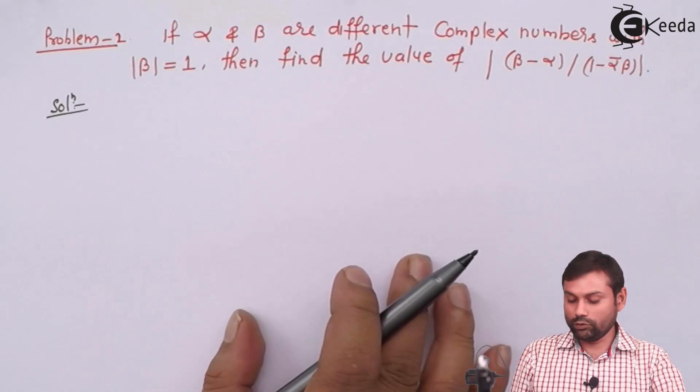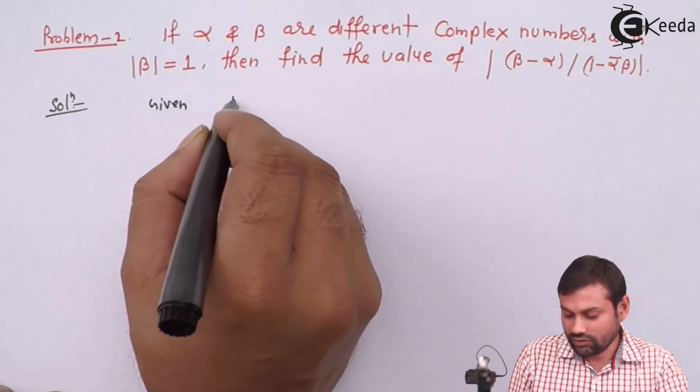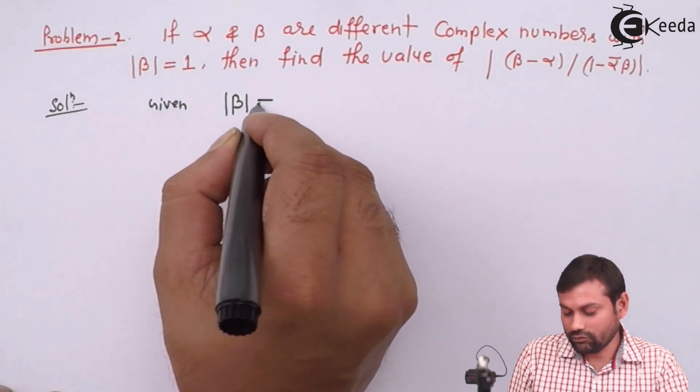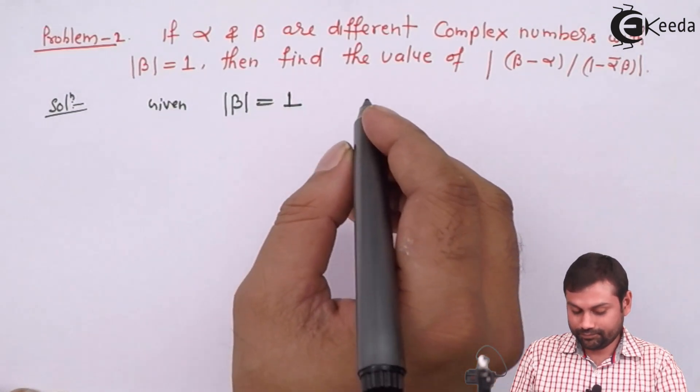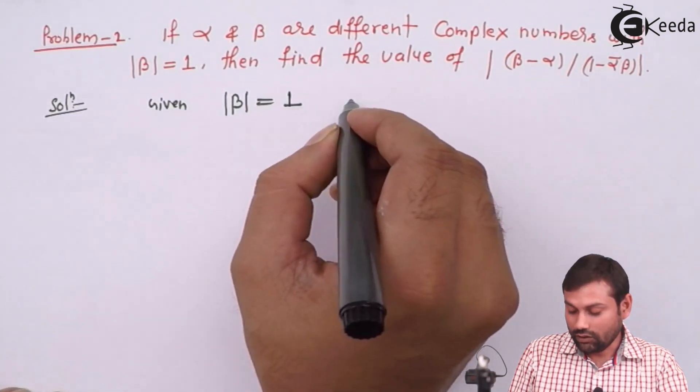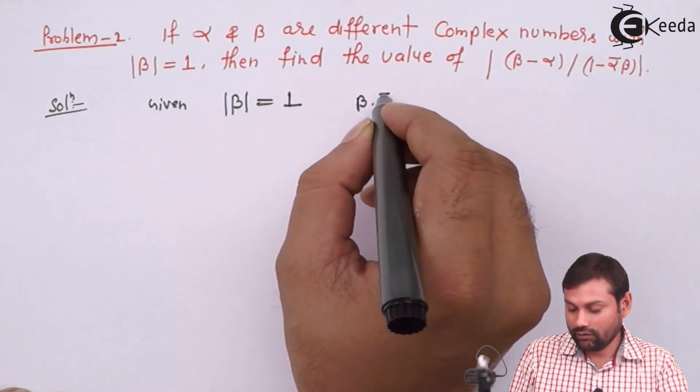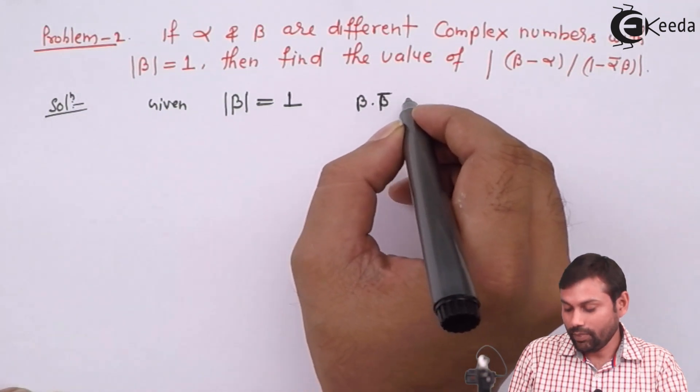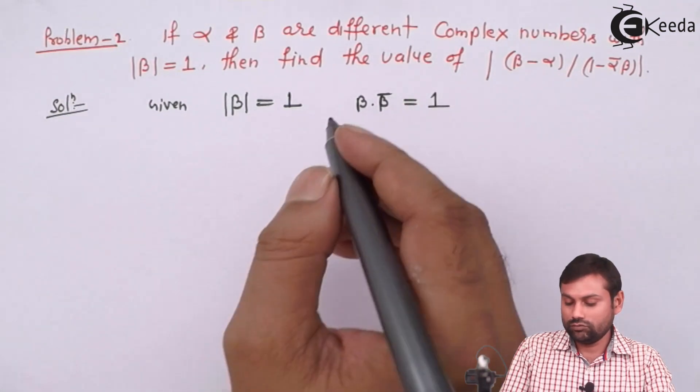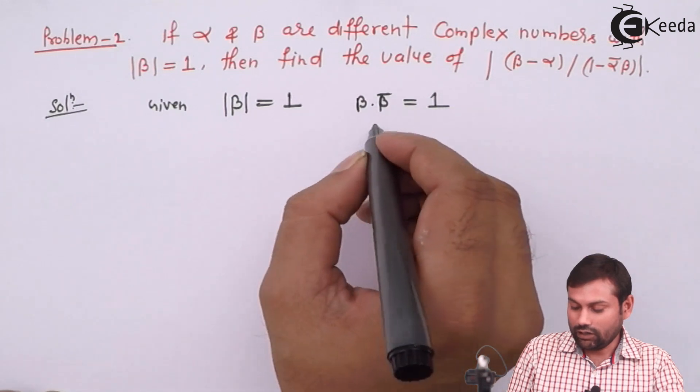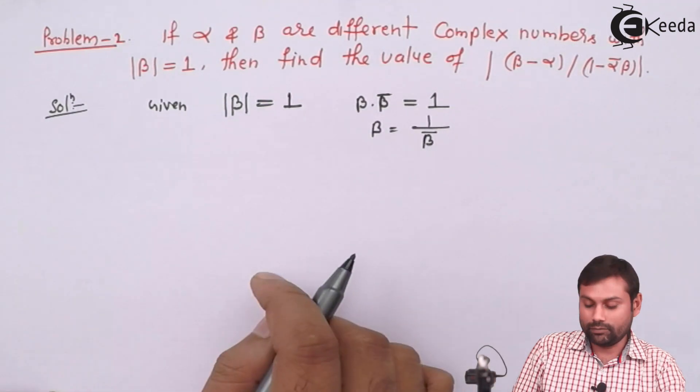Since modulus of β equals 1, we can say mod β times β̄ equals 1. From this, we can say β equals 1 over β̄.